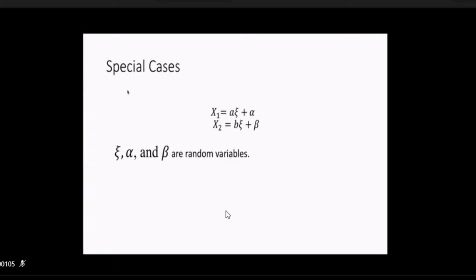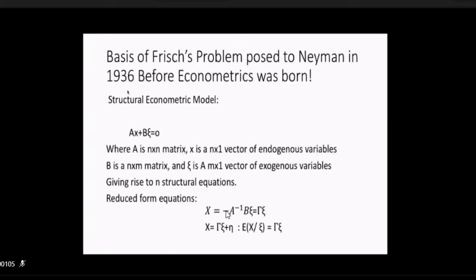Then, as an economist, I would like to ask, or Frisch would have asked, not only there is a regression of x1 on x2, but is there a regression of x2 on x1, which is independent of this? Can there be two independent regressions? One x1 on x2 and another x2 on x1? And a solution of those two regression equations would solve x1 and x2. And that is that Frisch structural equation I wrote, Ax plus Bξ is equal to zero, is that equation.